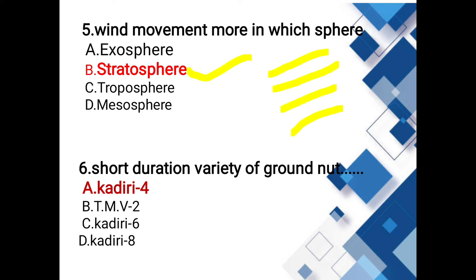Short duration variety of groundnut: options are Kadiri 4, TMV2, Kadiri 6, Kadiri 8. The answer is Kadiri 4 — it is a short duration variety of groundnut.